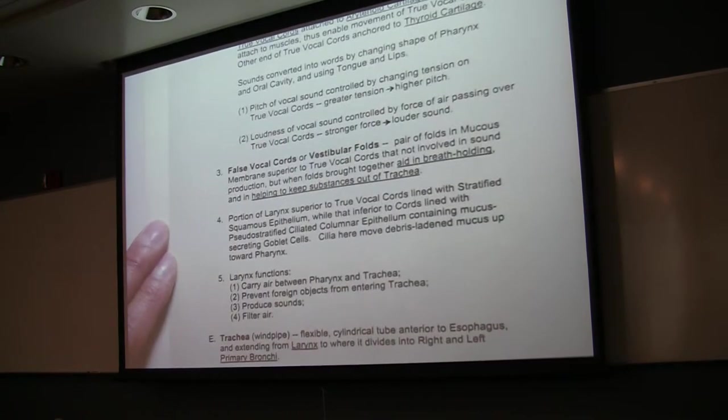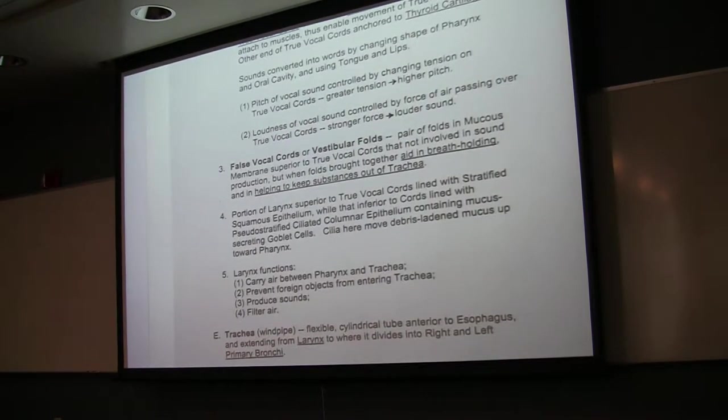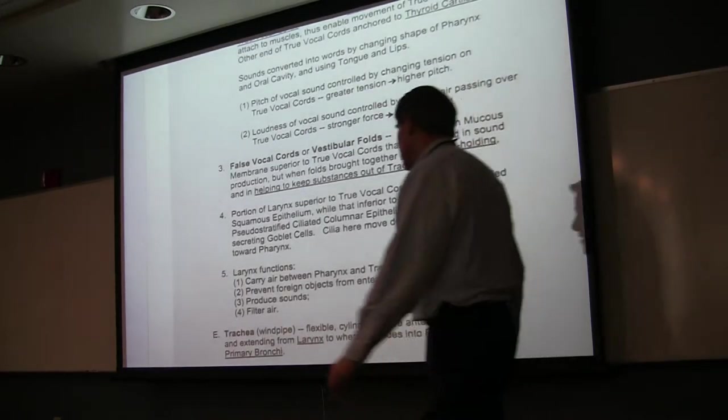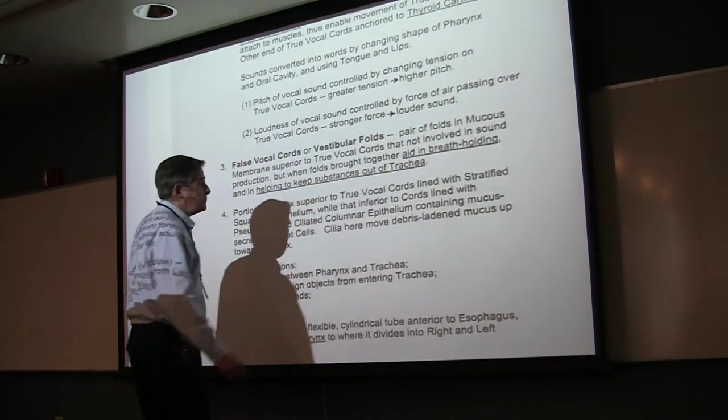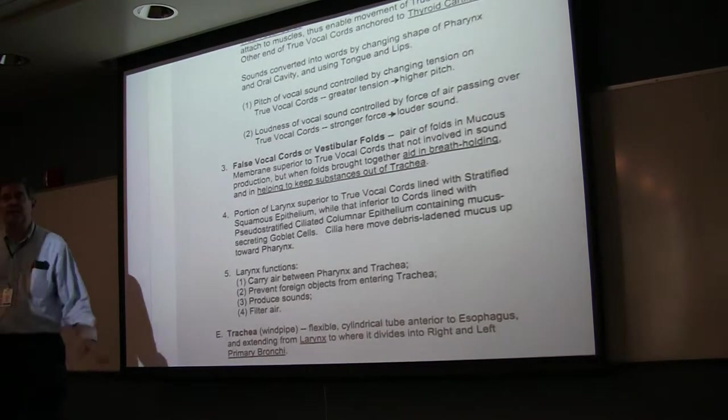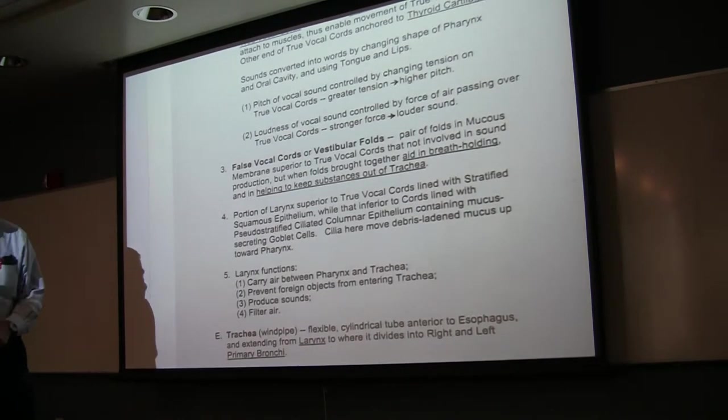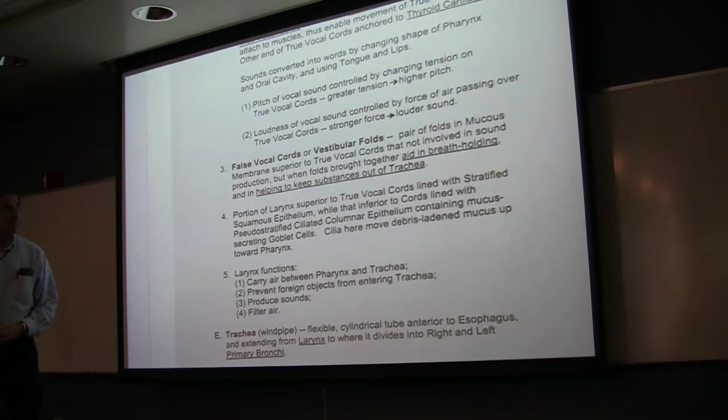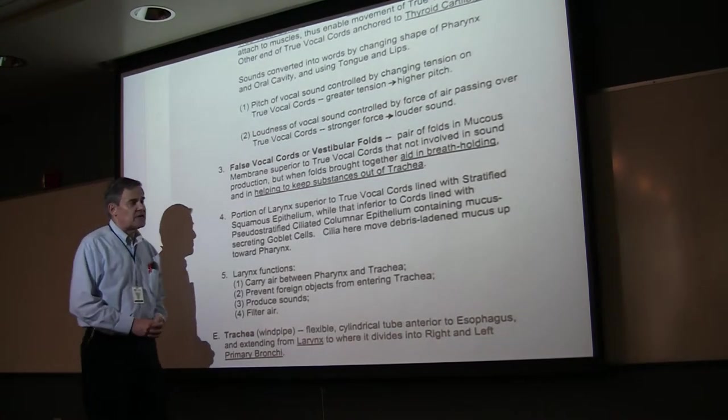The superior pair are the false vocal cords or vestibular folds. They're not involved in sound production, but they aid in breath holding. They come together and help to keep things from going down into the larynx or into the trachea.